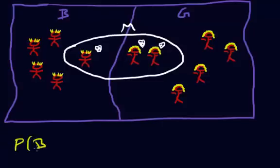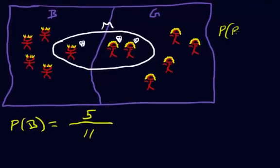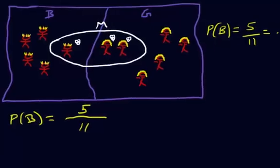First example: what is the probability that you select a boy? We're dealing with all of these people — what are the chances I randomly pick a boy? How many boys are there? Whether they like math or not, just count the boys: we got five. Out of how many people could I have possibly picked? Five boys plus six girls is eleven. So the probability of a boy is five out of eleven, which is about .45.